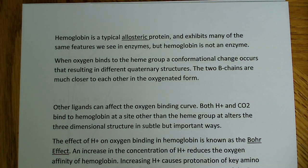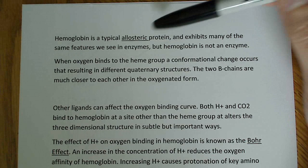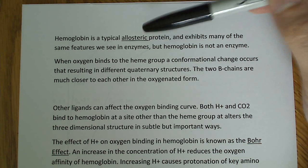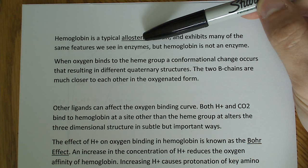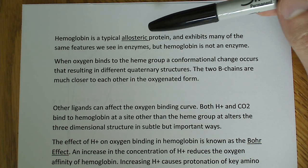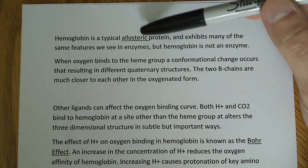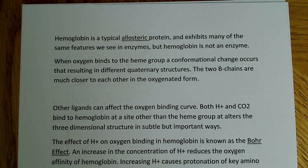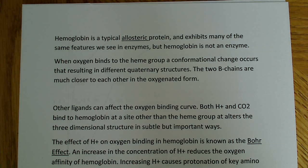An allosteric protein can bind some sort of small ligand to a site other than histidine F8, where the oxygen binds. So it will bind to a place other than where oxygen binds, and it will cause some sort of conformational change that will affect the way hemoglobin binds oxygen.